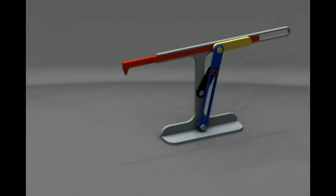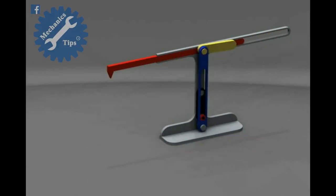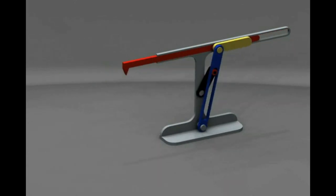A quick return mechanism such as the one seen is used where there is a need to convert rotary motion into reciprocating motion. Many machines have this type of mechanism, and in the workshop the best example is the shaping machine.